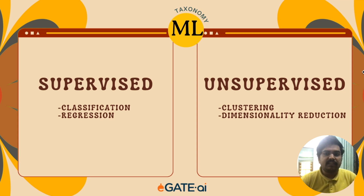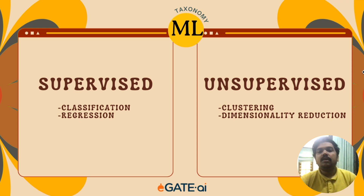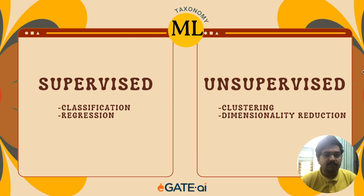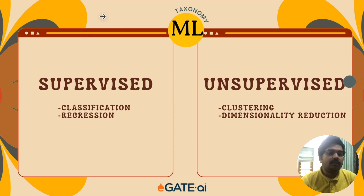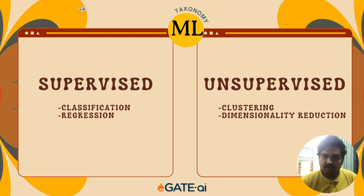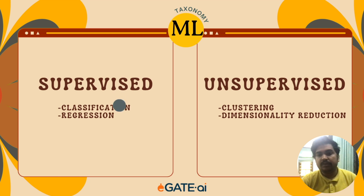If we look at the taxonomy of machine learning, say relevant to GATE, we may consider the following. An ML system may either be supervised or unsupervised. In supervised systems, we need training data to be labelled, where the inputs are paired with the correct outputs. It may further be categorized into classification and regression.